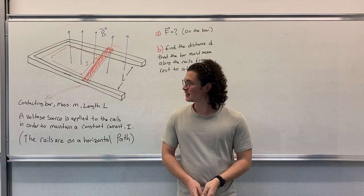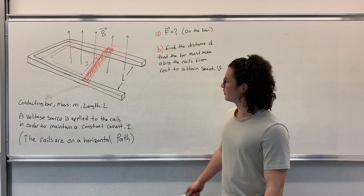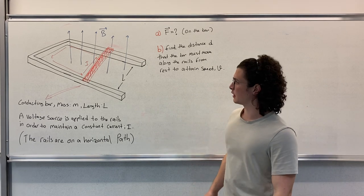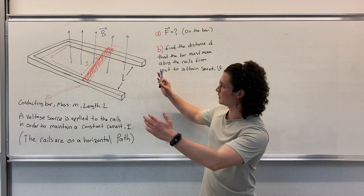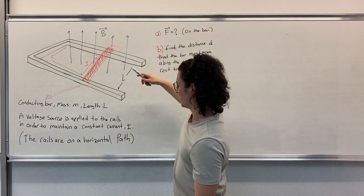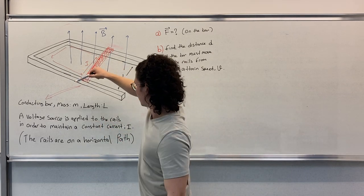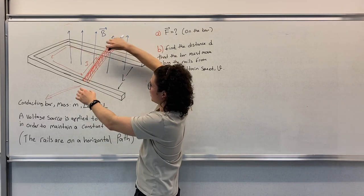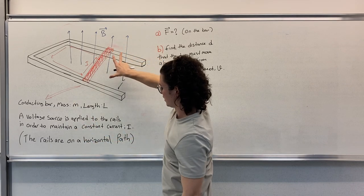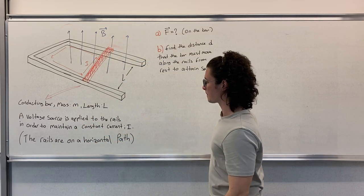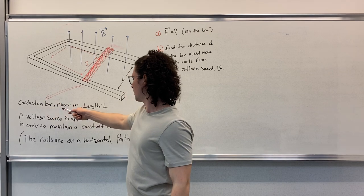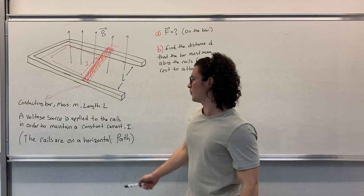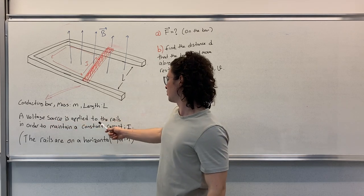Hello guys, I'm Hasan. Today we'll be solving a question from magnetic forces and fields. Here we have a system with horizontal rails and a conducting bar lying on these rails. The bar has mass M and length L.